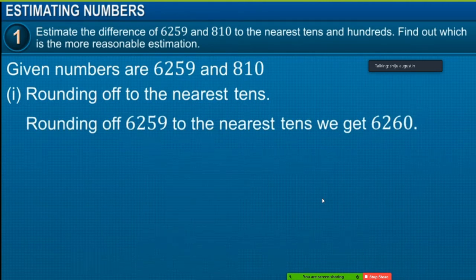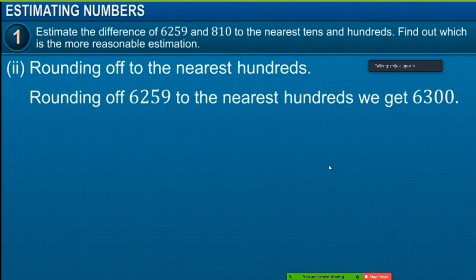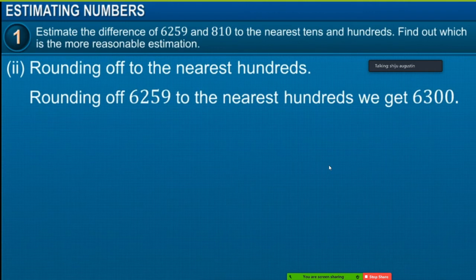We need to round off the numbers to the nearest hundreds before calculating their difference. Rounding off 6,259 to the nearest hundreds, we get 6,300. Rounding off 810 to the nearest hundreds, we get 800, as 810 is closer to 800. Therefore, we need to find the difference between 6,300 and 800, which is 5,500.